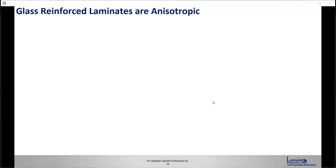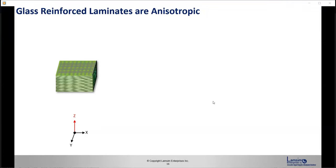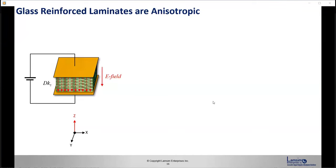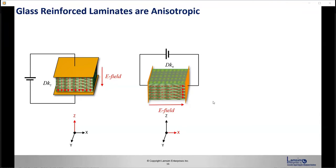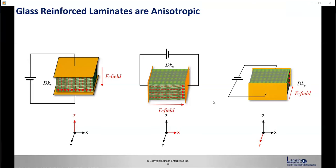All glass-reinforced laminates are anisotropic. If we imagine a block of core laminate showing the weave pattern, with copper sheets above and below and a DC potential applied, the electric fields go perpendicular to the weave — that's DKz. If we move the plates to the end along the x direction, we see the E-fields moving that way — DKx. And in the y direction, DKy. Since DKx and DKy are approximately the same, we just denote it as DKxy.